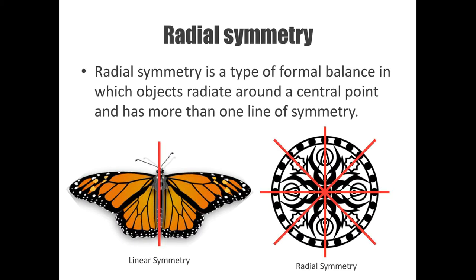If you look at the butterfly, it has one line of symmetry. If you fold it in half down the line of its body — which I don't recommend doing to an actual butterfly — it's the same on both sides. But if you were to rotate that line, it wouldn't be symmetrical anymore. You couldn't fold the top down to the bottom half and have those two sides be the same.